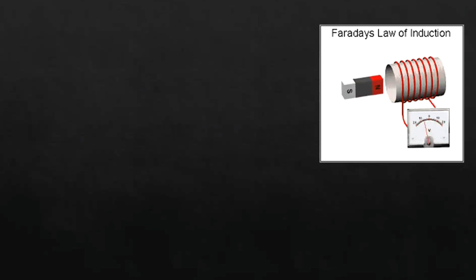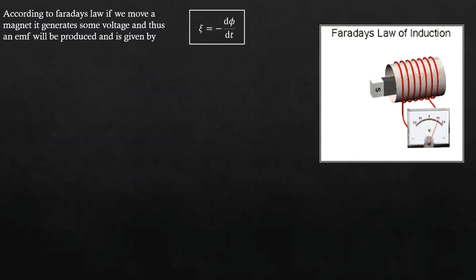According to Faraday's law, if we place a magnet inside a circular coil and keep moving it, it generates some voltage and thus an EMF will be produced. It is given by ε equals minus dΦ/dt, where Φ is the magnetic flux. It can be given by B·A or BA cos θ, or in integral form it can be written as integral B·dA.